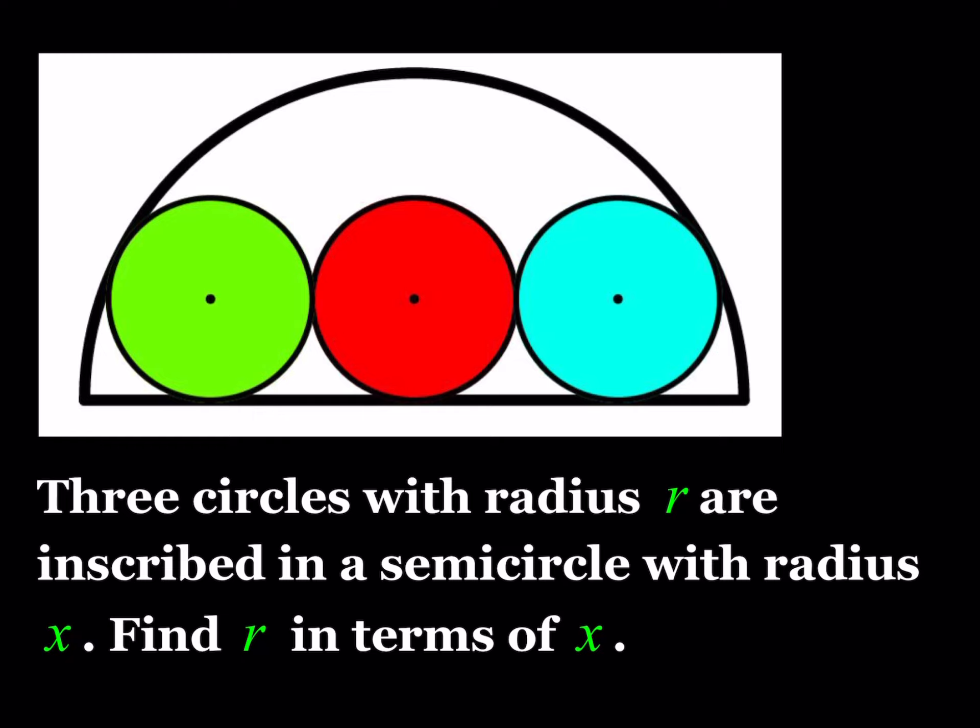Three circles with radius r are inscribed in a semicircle with radius x, and we're supposed to find r in terms of x. I'll include some links in the description down below for your reference. Let's get started.